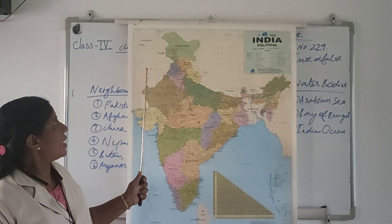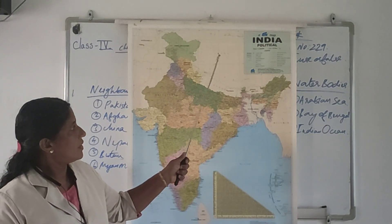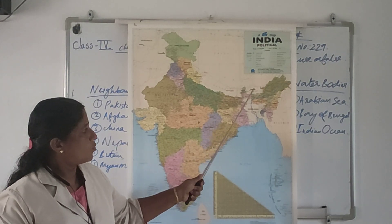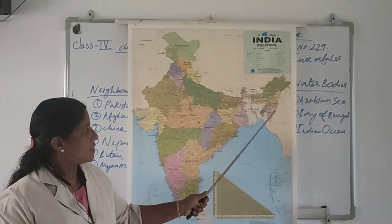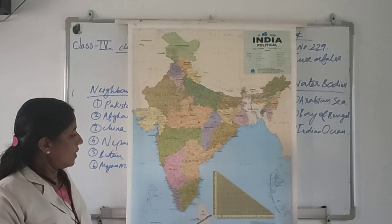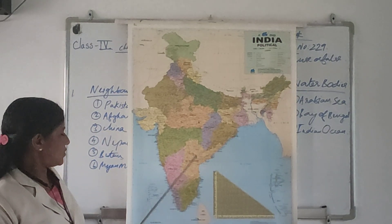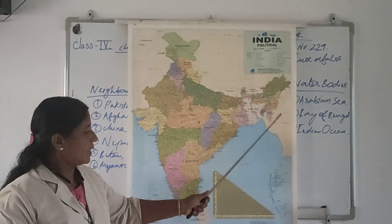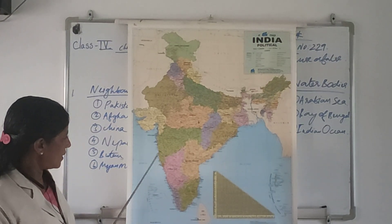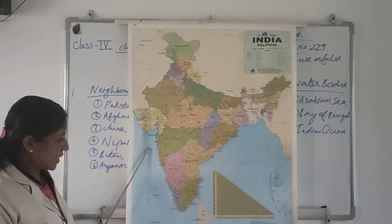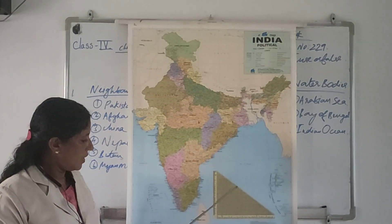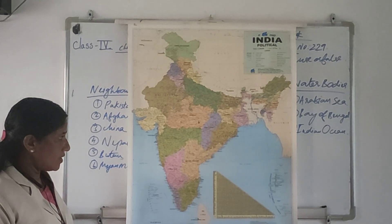The neighboring countries are: Pakistan, Afghanistan, China, Nepal, Bhutan, Bangladesh, Myanmar, Sri Lanka, and Maldives. The three water bodies are: here is the Arabian Sea on the western portion, the Bay of Bengal on the eastern portion, and the Indian Ocean on the southern portion.